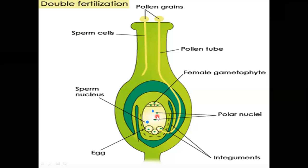As this involves the fusion of three haploid nuclei, it is termed triple fusion. Since two types of fusions — syngamy and triple fusion — take place in the embryo sac, the phenomenon is termed double fertilization.